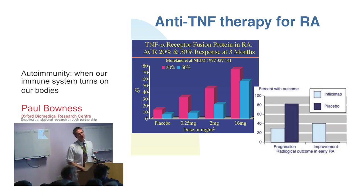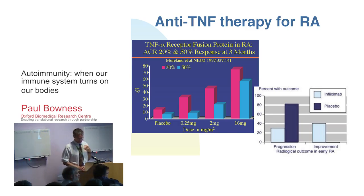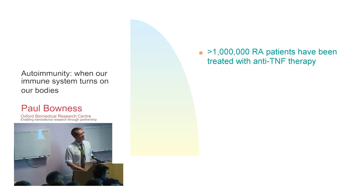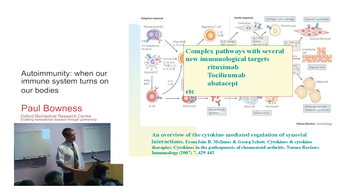We now have at least five different types of anti-TNF treatment and they all have about the same benefit in terms of how many people respond. The great thing about these drugs is that when they do work, they really make a big difference and they often work very quickly. But only about 50 to 60 percent of people will respond to them, and we don't understand why some people do and some people don't - and that's something we want to research. These treatments have been amazing: over a million patients with rheumatoid around the world have had anti-TNF therapy, and in the Oxfordshire region we have a thousand patients that we're treating with anti-TNF or related biologics.